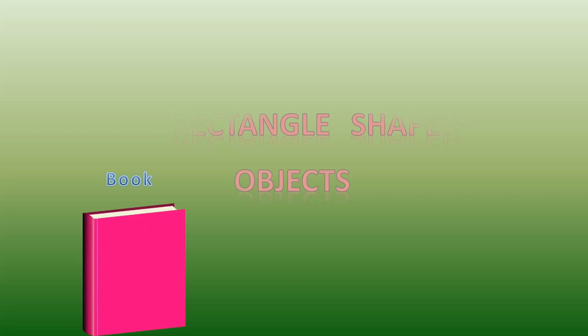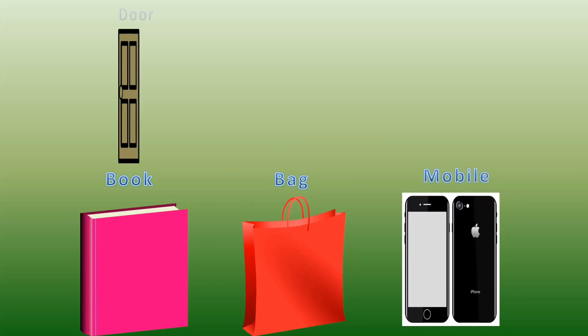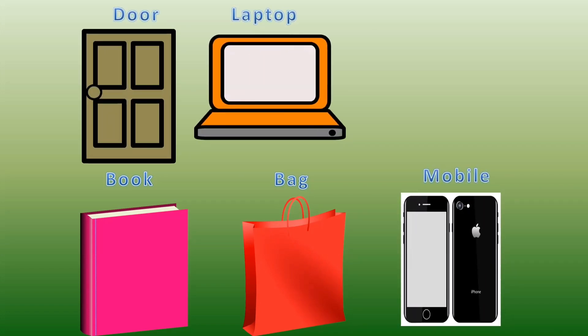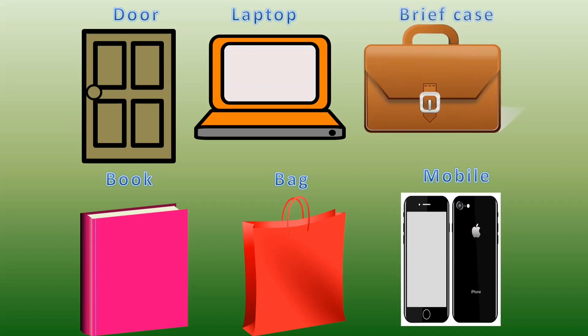Can we name the objects which are rectangle in shape? Kids can find it out. Book, bag, mobile, door, laptop, office bag. Very good. These are all rectangle in shape.